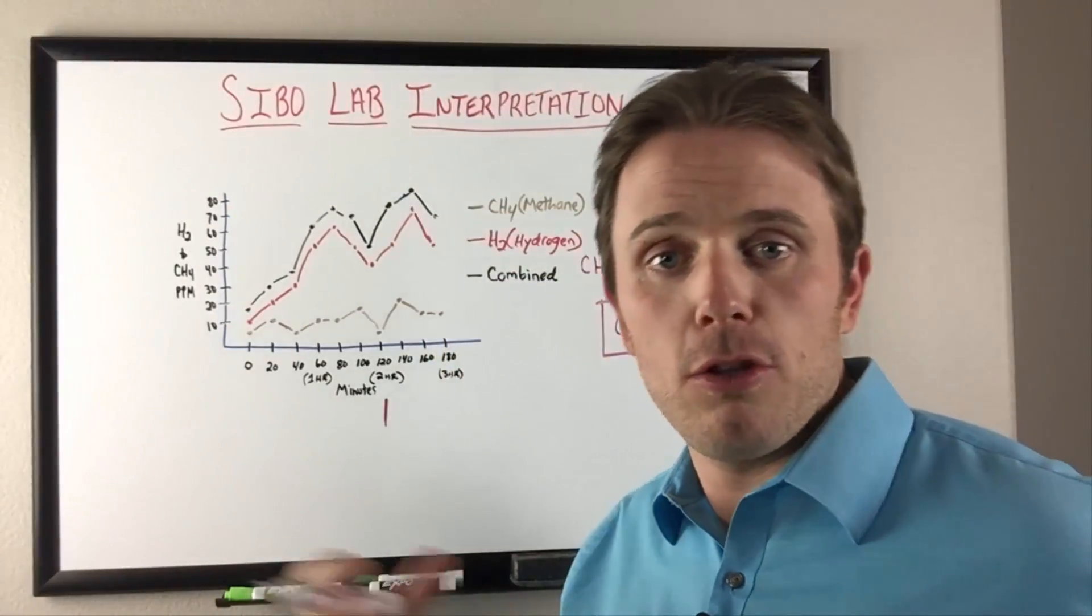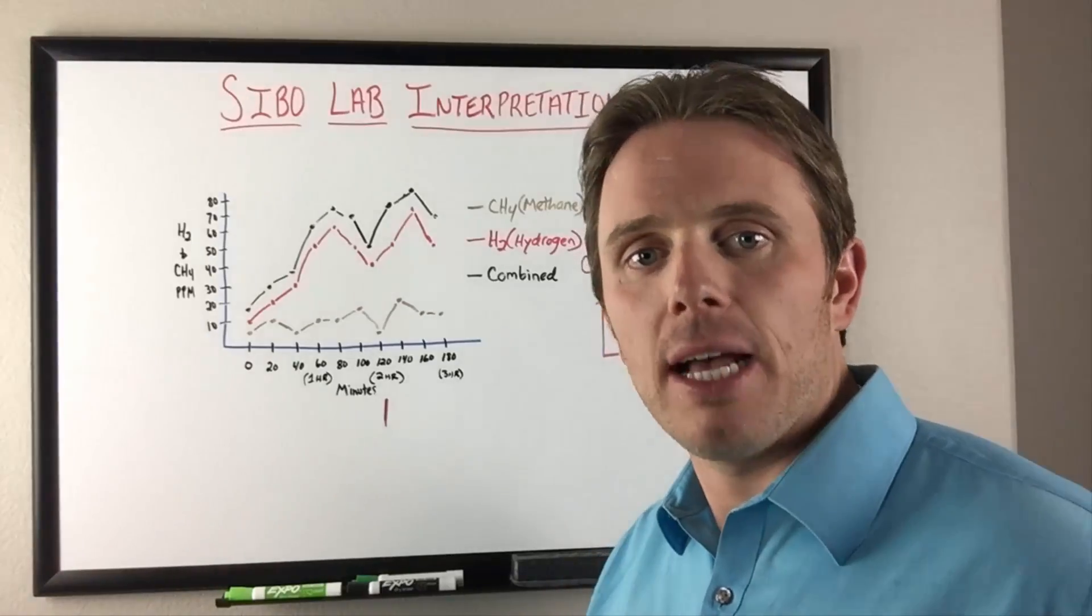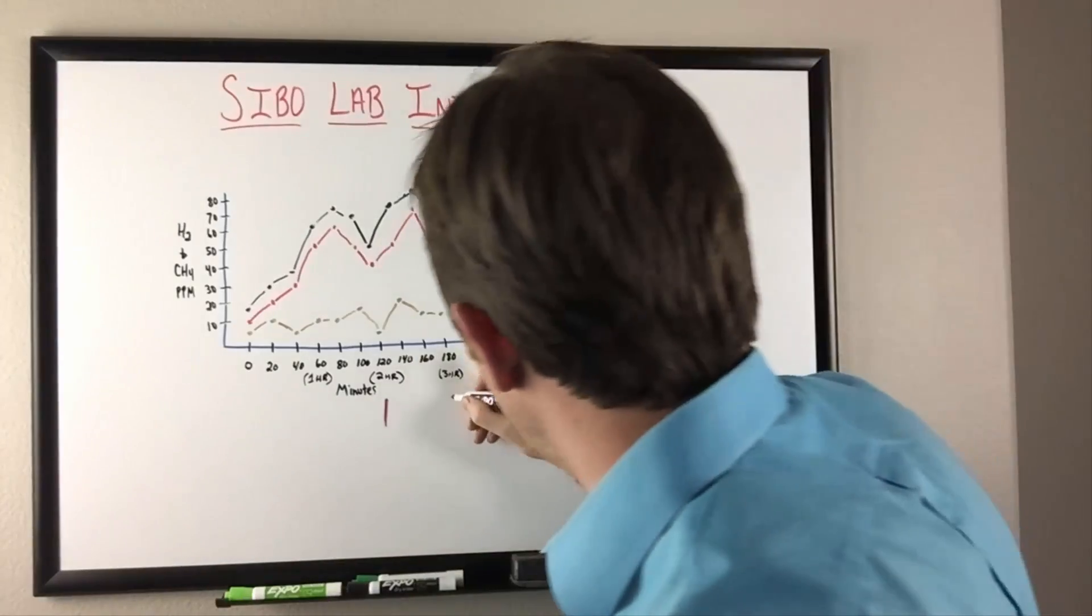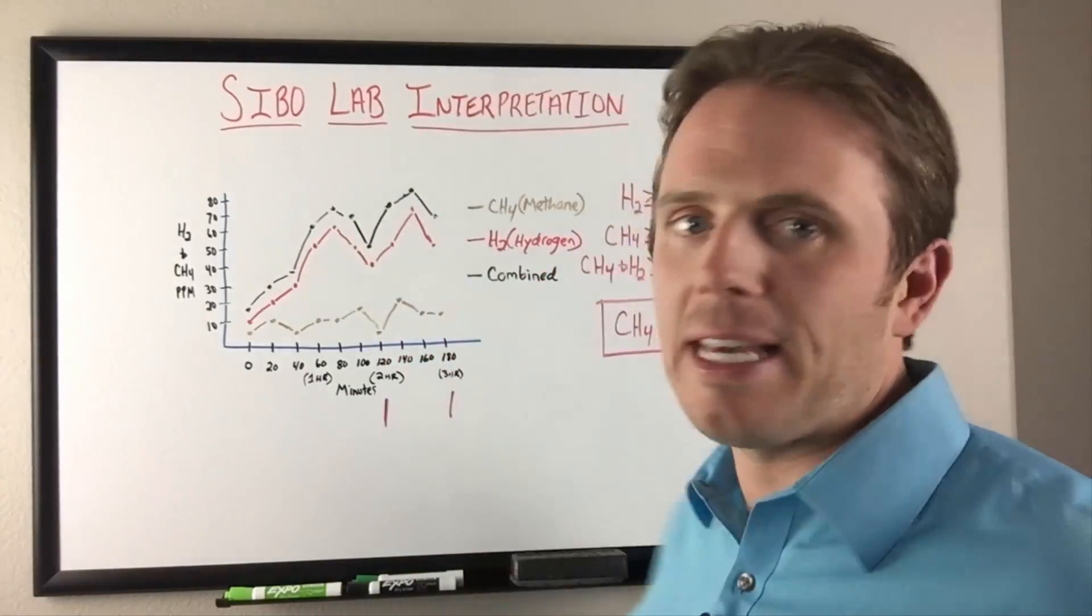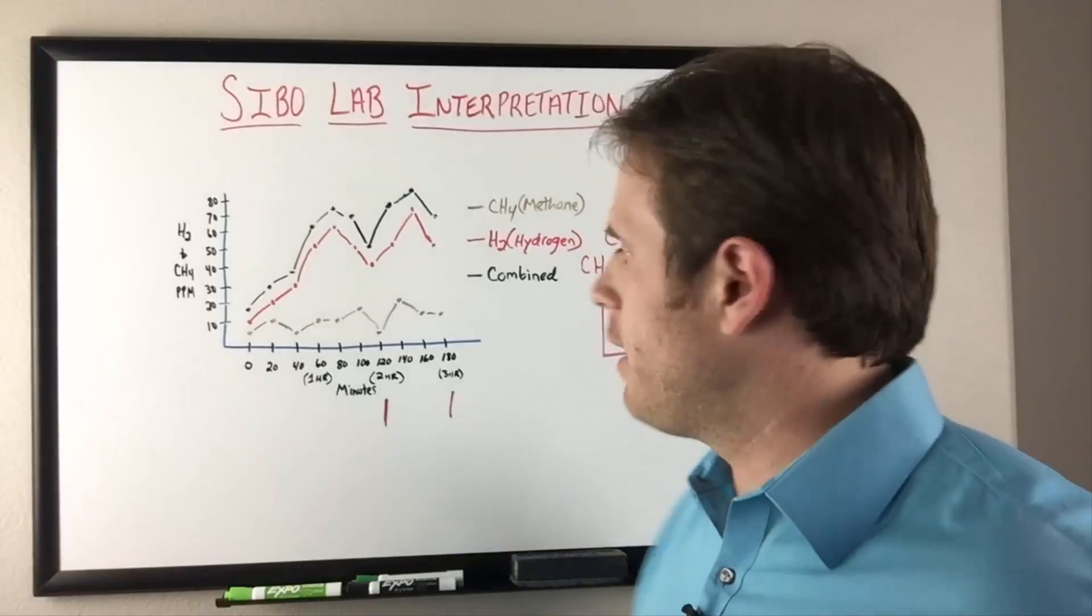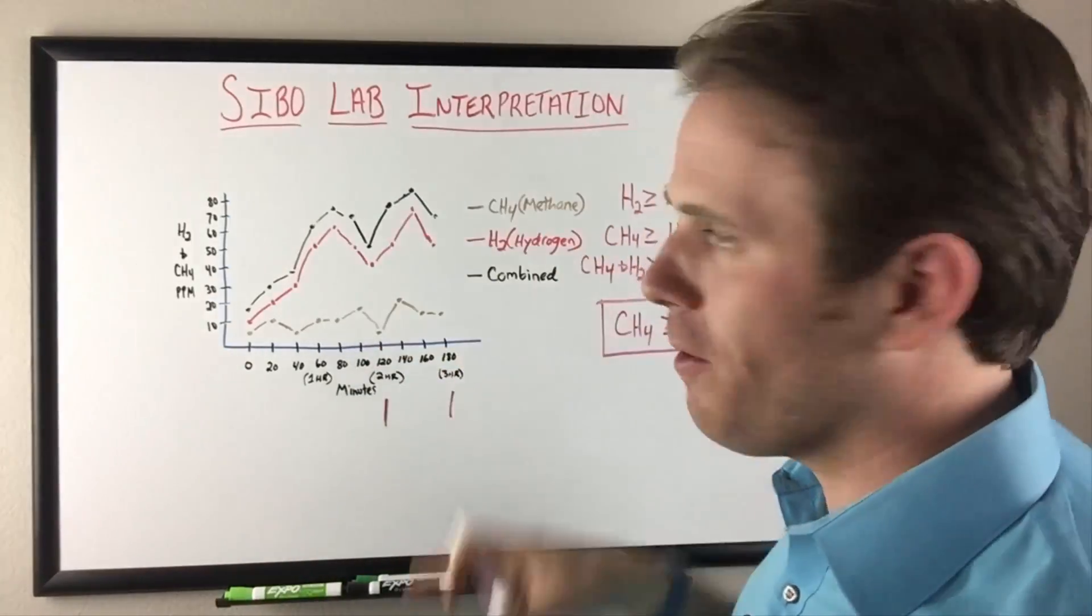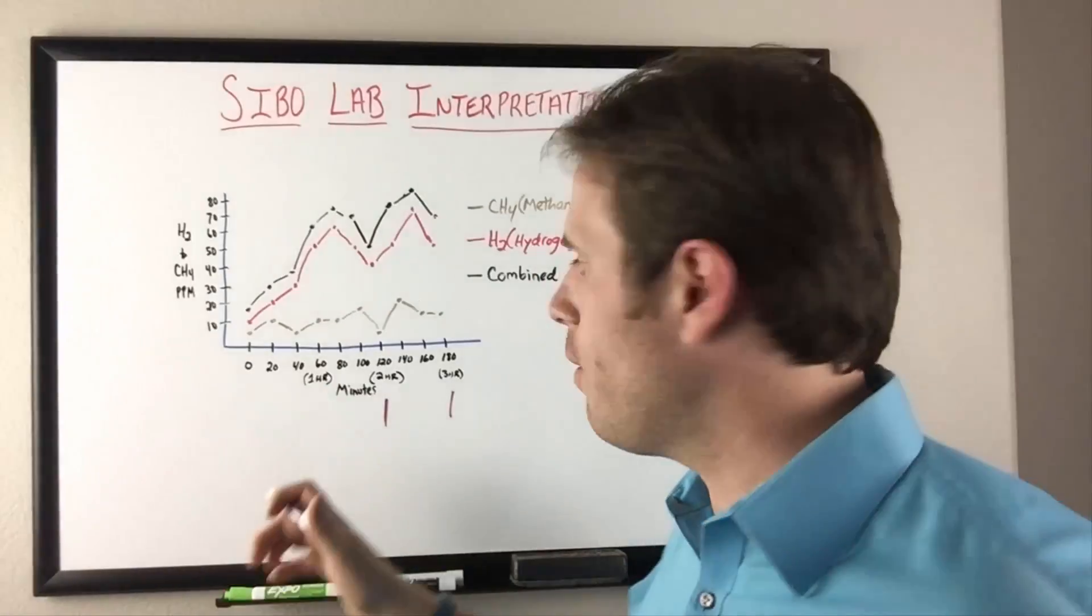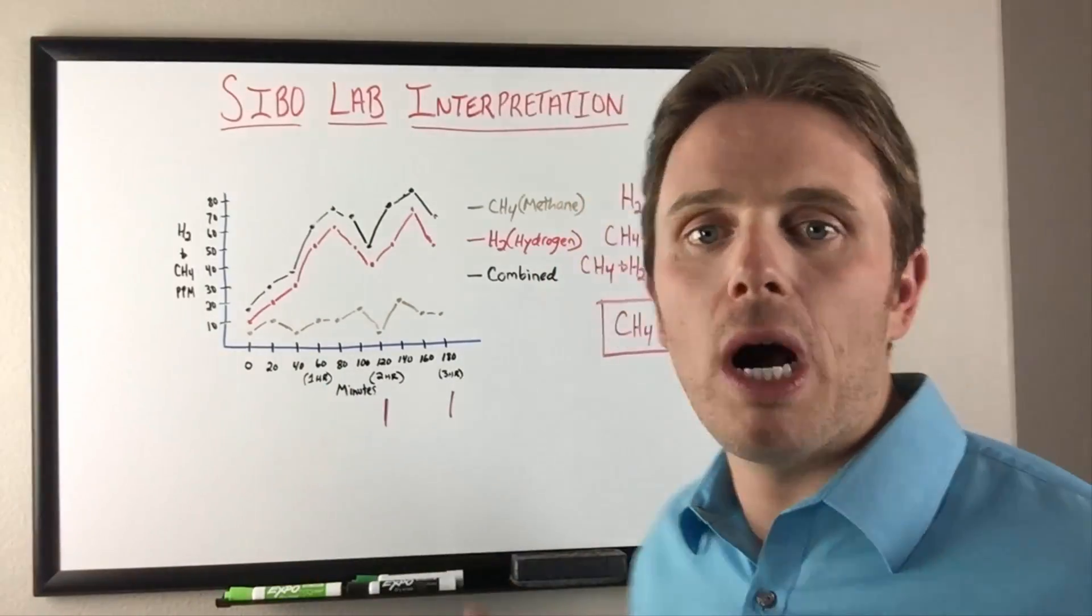We typically use either the Genova or the NCNM test, which is the one that Allison Seebecker promotes, and that one ends at about a three hour sample. That can be helpful because some of the gas can lag out. Typically the diagnostic criteria for SIBO happens between zero and two hours.